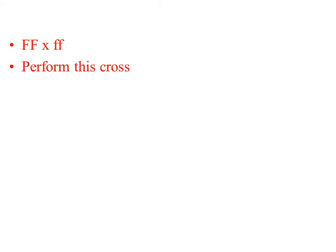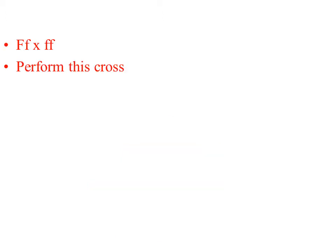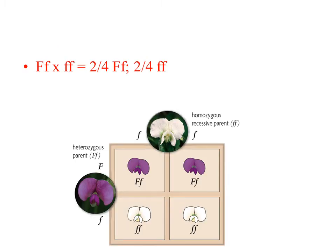I would like you to perform this cross. You should have received all heterozygote individuals. I would like for you to perform this next cross. Your results should look something like this — half heterozygotes and half homozygote recessive.